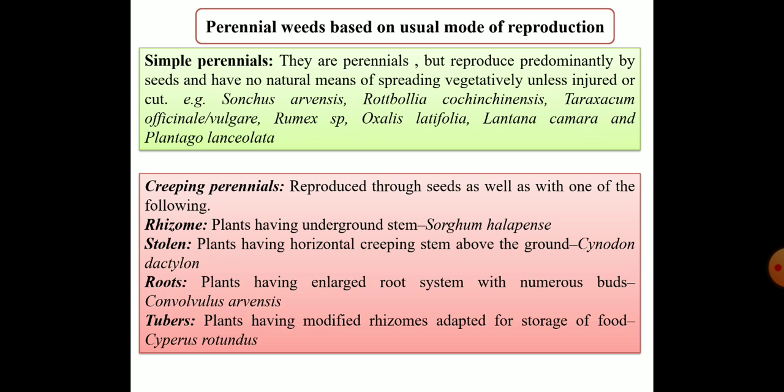The second category is creeping perennials, which are reproduced through seeds as well as through vegetative propagating materials. These include rhizome types — plants with underground stems — such as Sorghum halepense; stolon types — plants with horizontal creeping stems above the ground — such as Cynodon dactylon; root types — plants with enlarged root systems with numerous buds — such as Convolvulus arvensis; and tuber types — plants with modified rhizomes adapted for food storage — such as Cyperus rotundus.